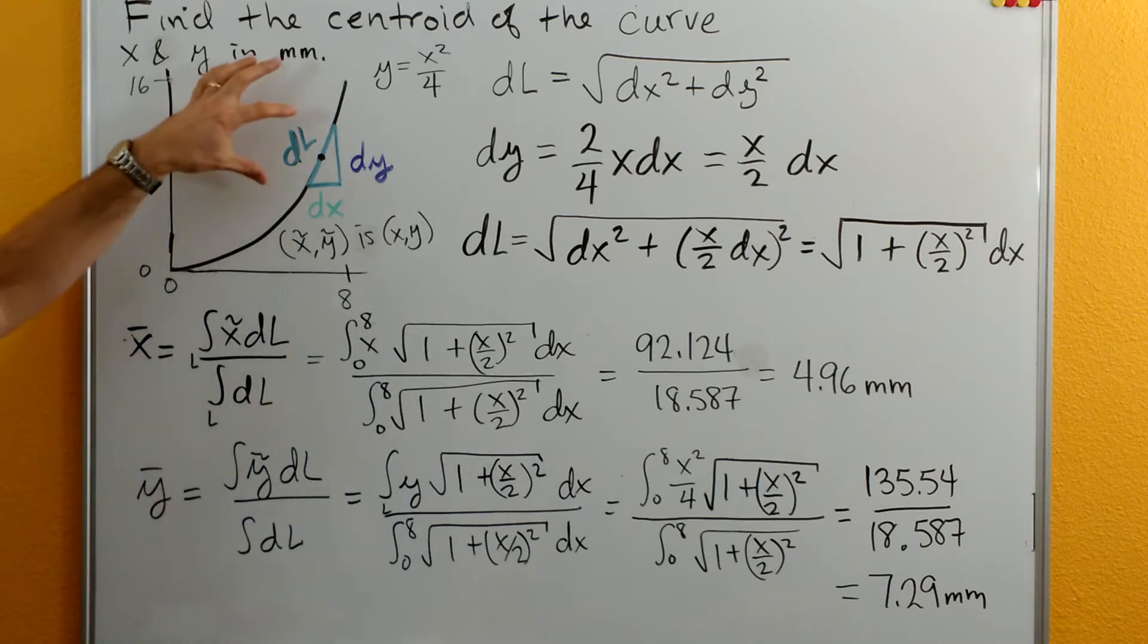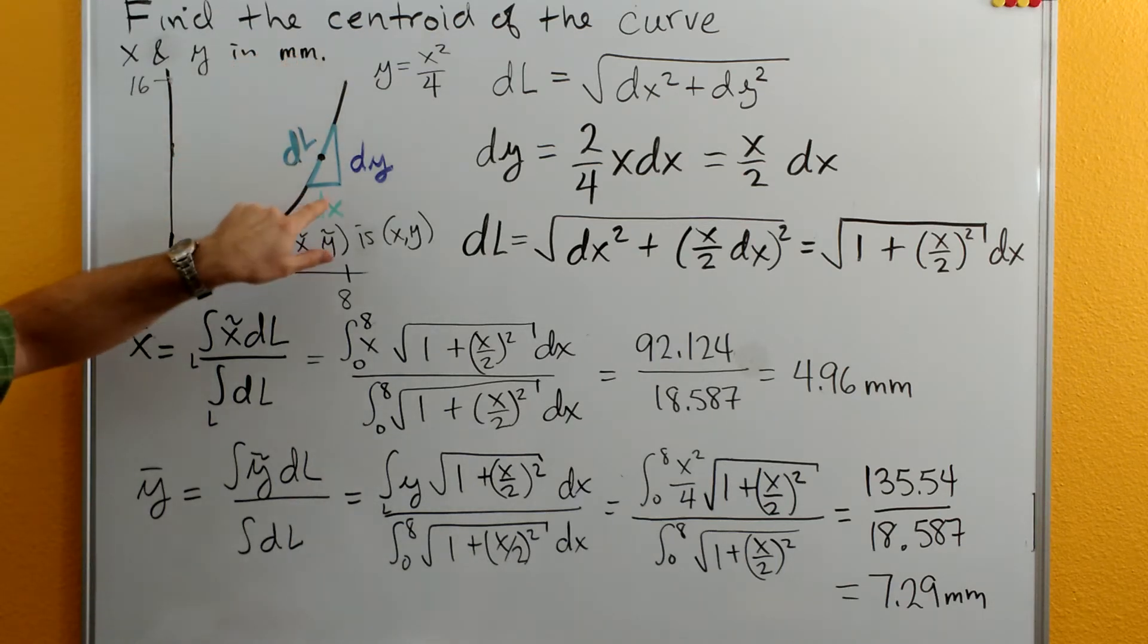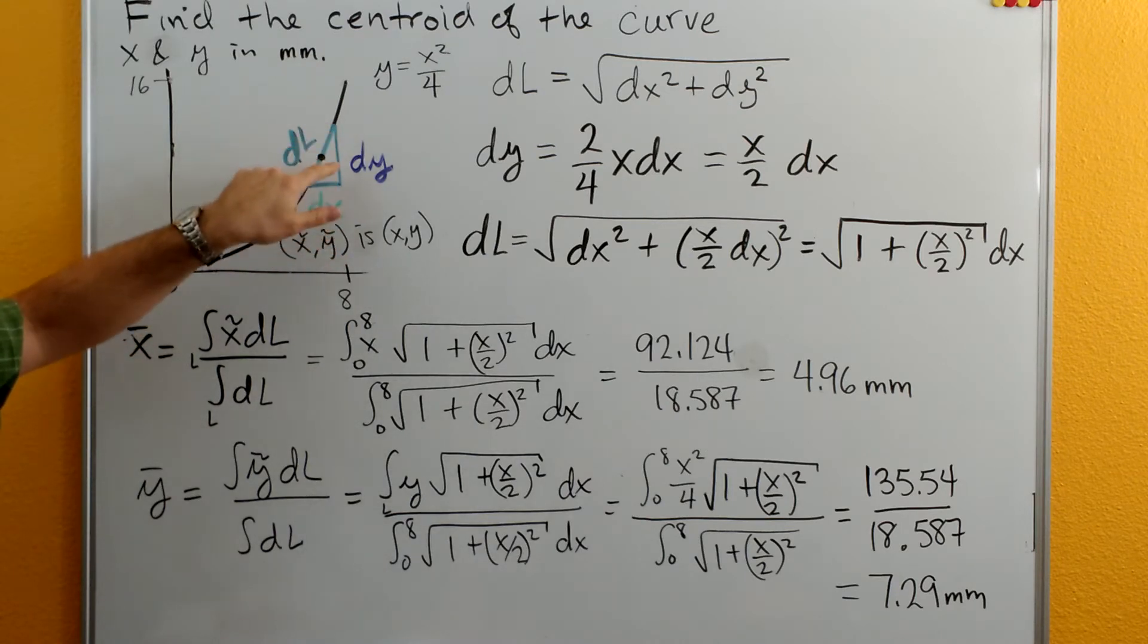Since we're looking along the length, we need to draw a differential length. Our differential length here is dl and then we'll construct a right triangle where the base is dx and the height is dy.